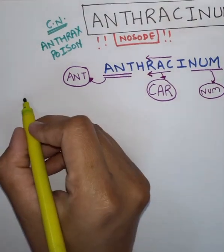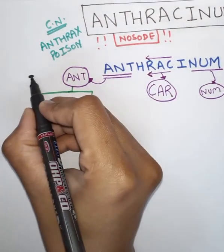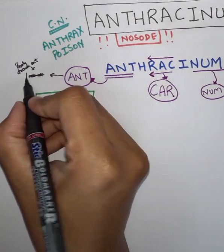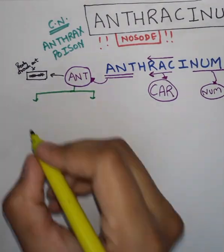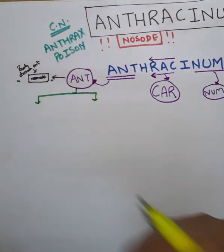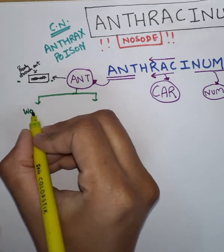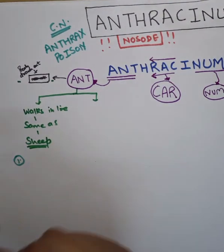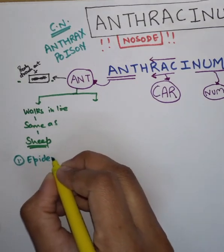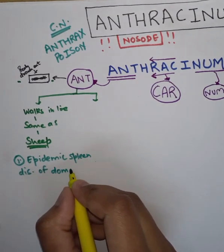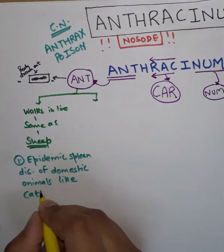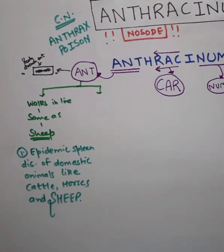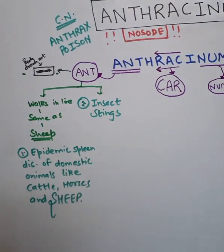I am going to draw an AND here. AND walks in lines — what other animal walks in lines? Sheep do. So our first point is epidemic spleen diseases of domestic animals like cattle, horse, and sheep. AND walks in lines, same as sheep.